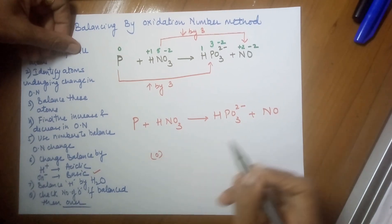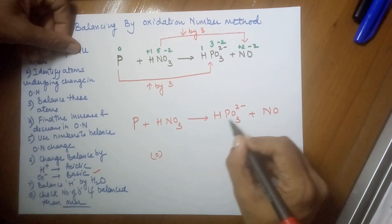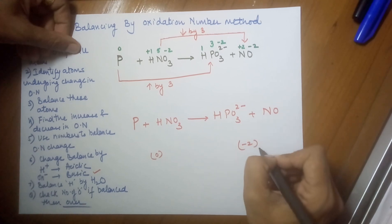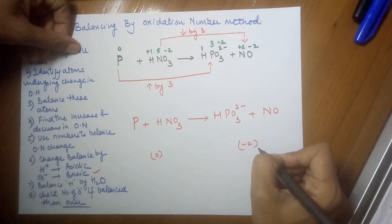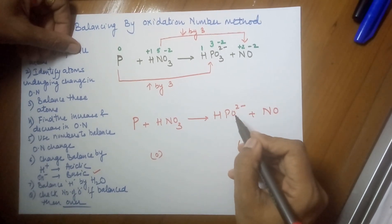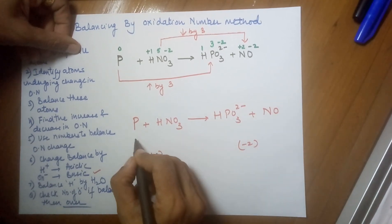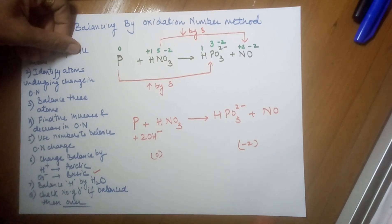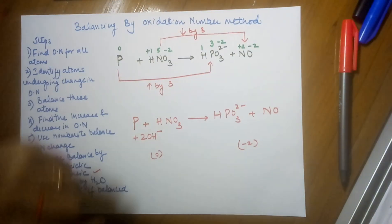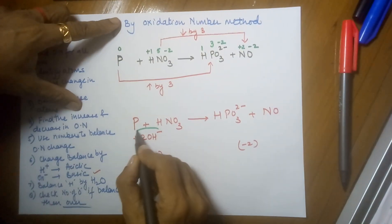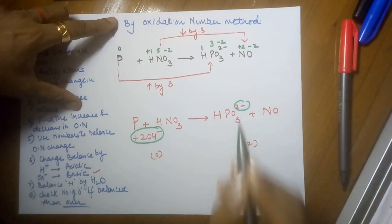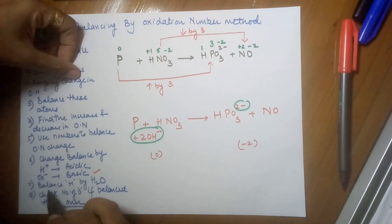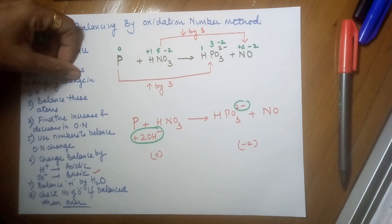Now the charge needs to be balanced. You can use acidic or basic medium; I am doing basic for your convenience. Let's check the charge: there is zero charge on the left side, and minus two on the right side. To make the charges equal, I need to add two OH⁻ on the left side.